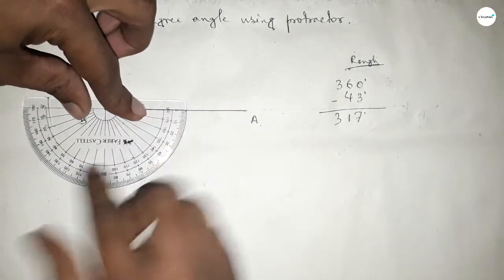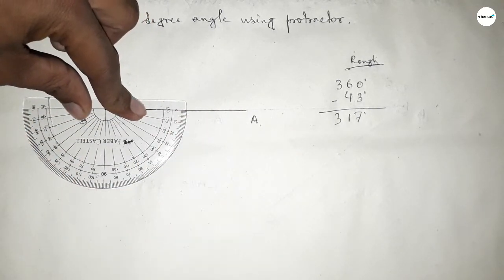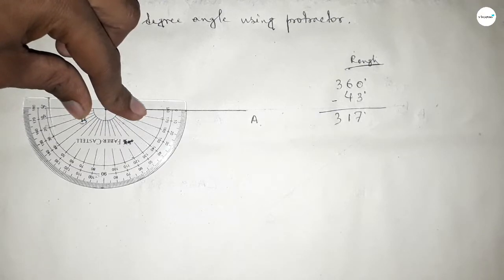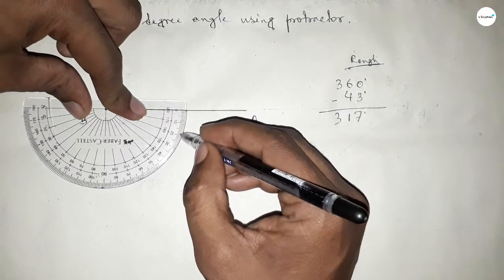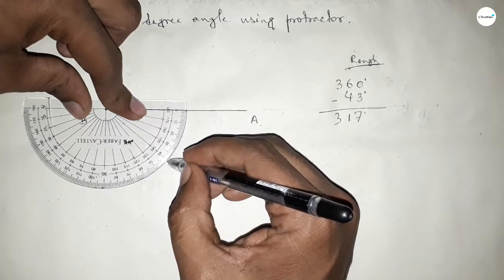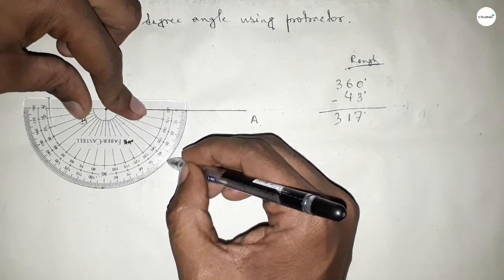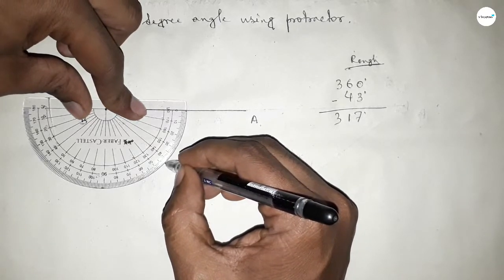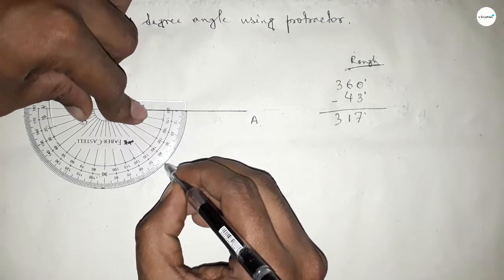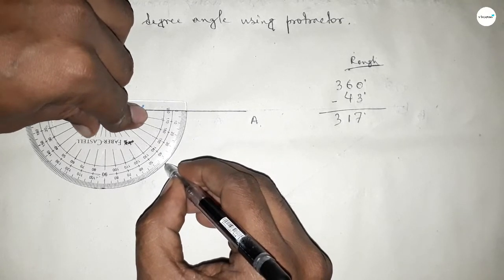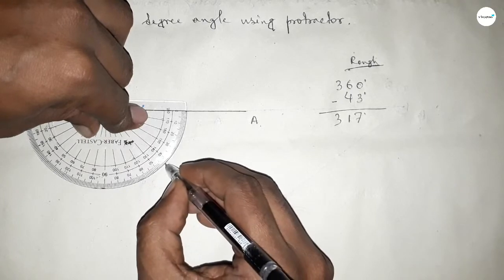So this is a total 360-degree angle. Now count 43 degrees: 10, 20, 30, 40, 41, 42, and this is 43 degrees. So if we subtract 43 degrees from 360 degrees, then we can get 317 degrees.